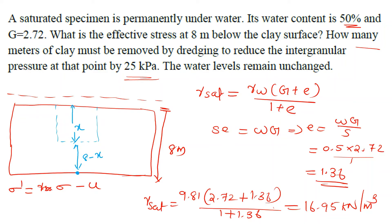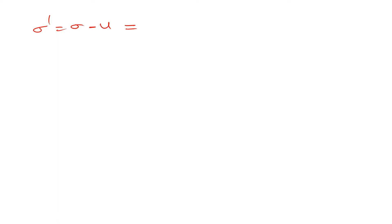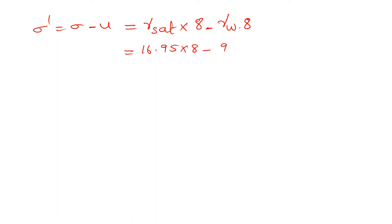Sigma dash equals sigma minus U. Gamma saturated is 16.95 kN/m³. The depth is 8 meters. So total stress is 16.95 into 8, and pore pressure is 9.81 into 8. Therefore, effective stress equals 57.12 kN/m².